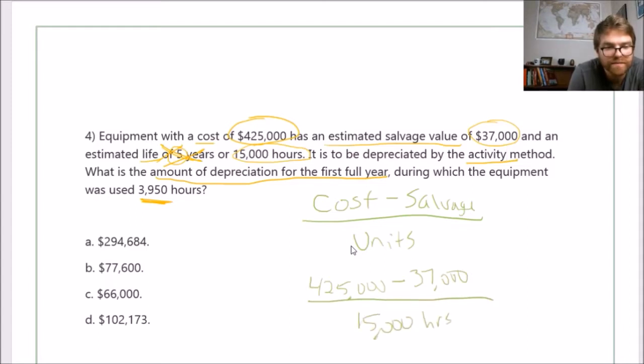Let's see what we get. It's going to be about $25.87 per hour.